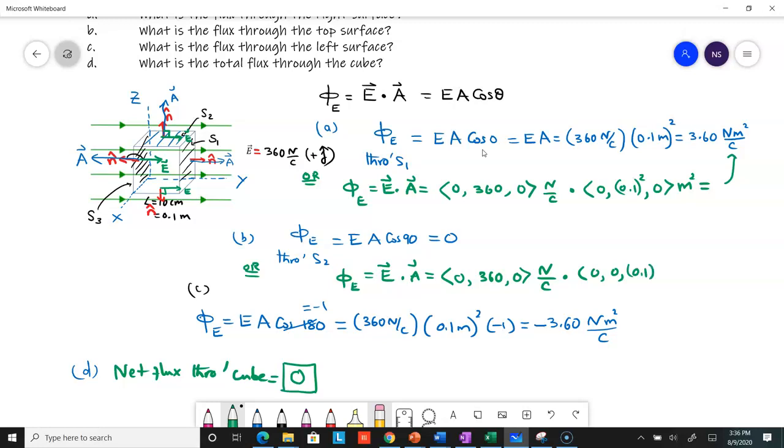Then you see the dot product will be zero. You could have done the same thing over here. It's more of the same. Φ_E = E·A.